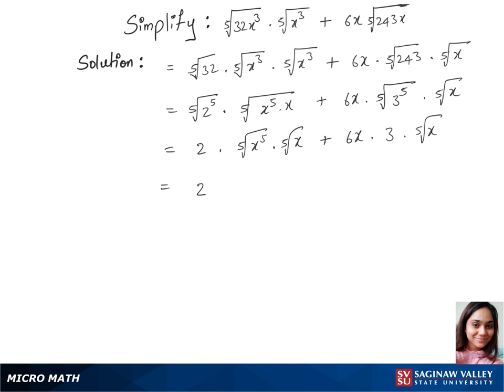Now we have 2 times—here fifth root of x and x⁵ gets cancelled, so that's x times fifth root of x plus 6 times 3 is 18x times fifth root of x. We can add these up.